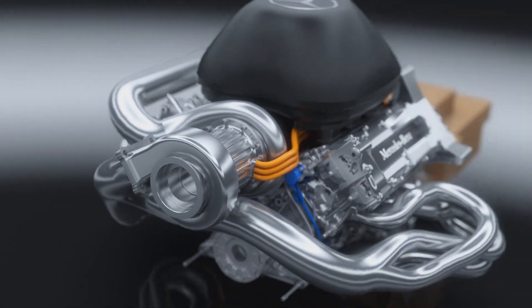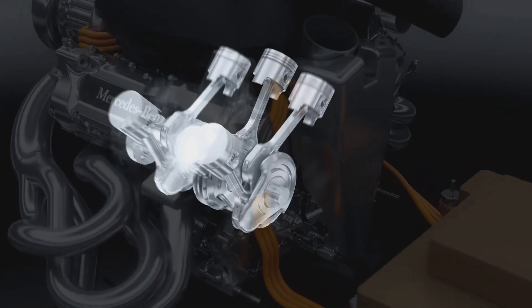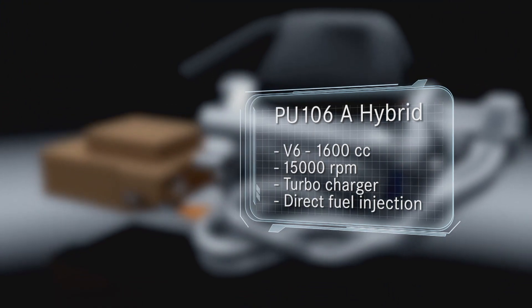The new engine regulations require downsizing from a 2.4-litre V8 to a 1.6-litre V6. Maximum revs have dropped from 18,000 rpm to 15,000.